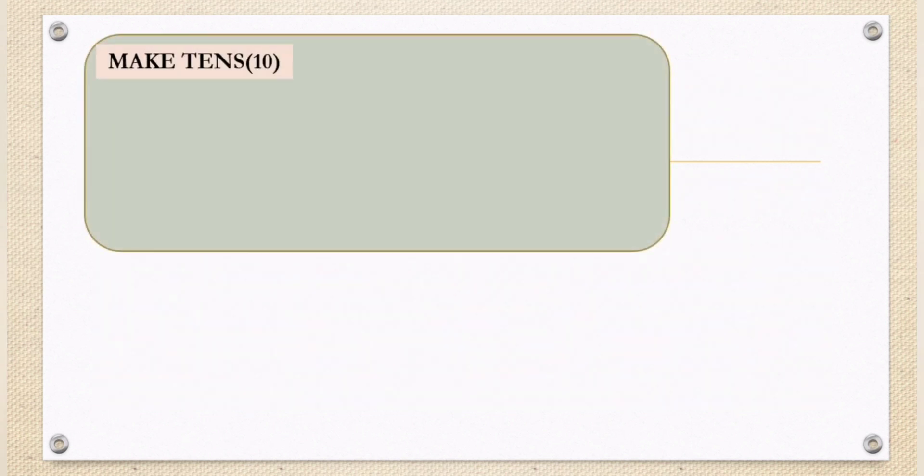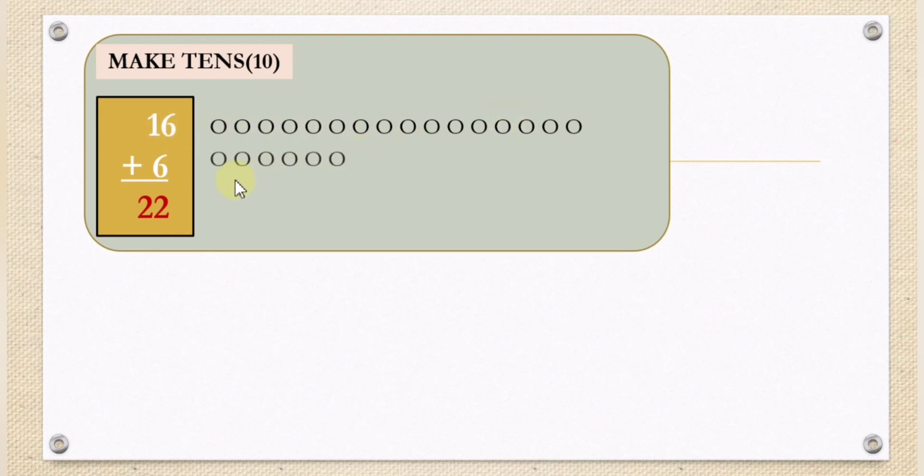Make tens. Here we have 6 plus 16. We have 16 circles on top, and on the bottom we have 1, 2, 3, 4, 5, 6 circles. What we are going to do is we are going to group 10 first.